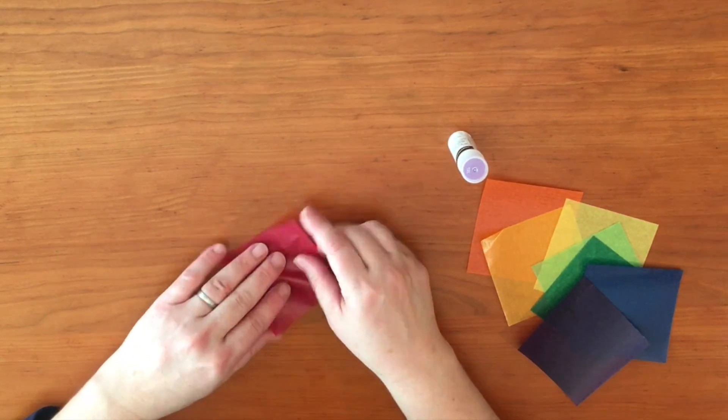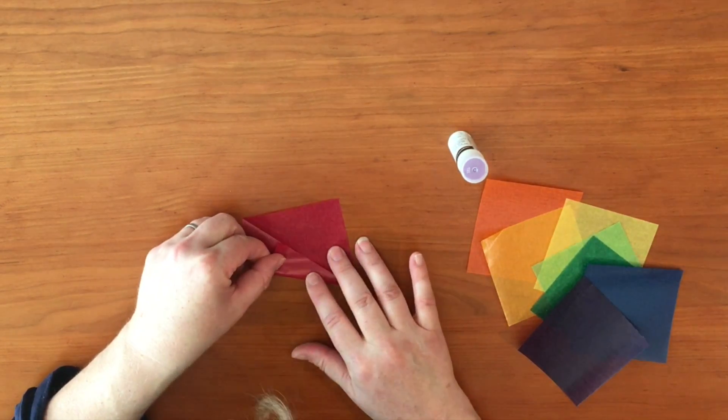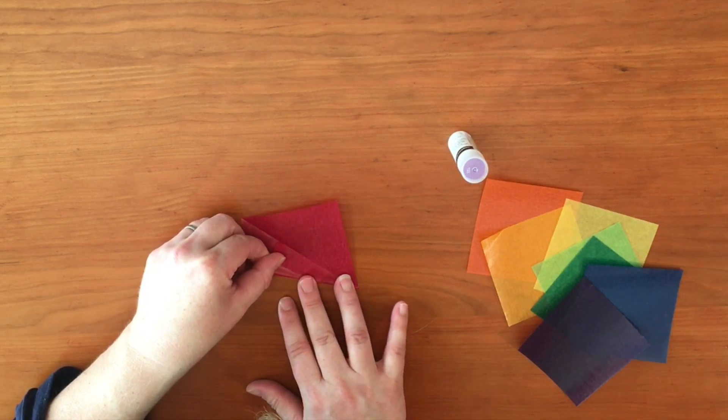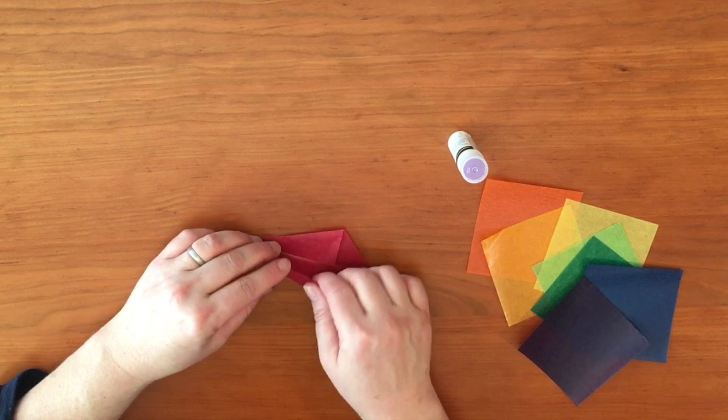After you fold it, we open it back up and then you're going to take one corner and bring it into the center line. And then we're going to do the same thing on the other side.